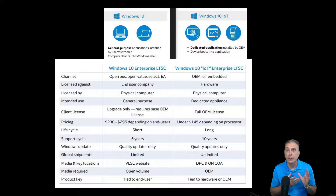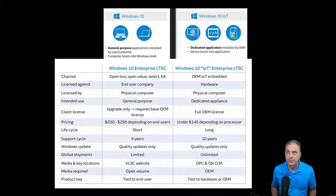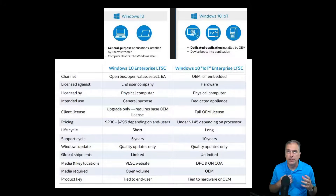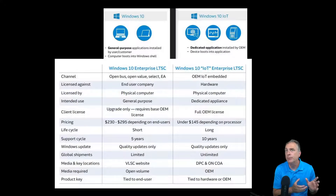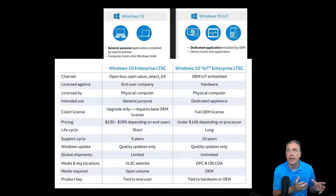The open volume has no stickers — it's a volume agreement tied to the company purchasing the licenses. The intended use for the IoT version is a dedicated appliance. The biggest thing that catches people is that in the open volume channel, Windows Enterprise is an upgrade only, so it still requires an OEM base license. Your computing device has to have an OEM Windows 10 Pro license, and then you're buying a very expensive upgrade.